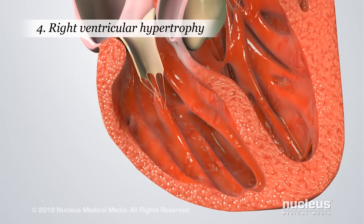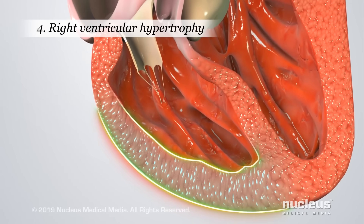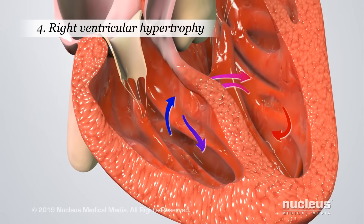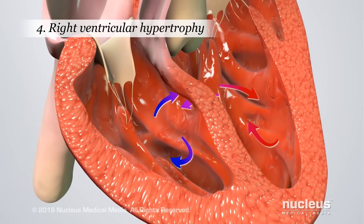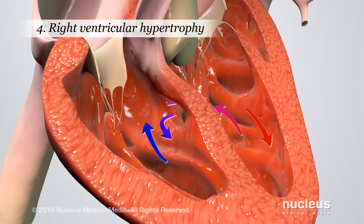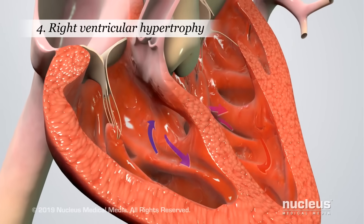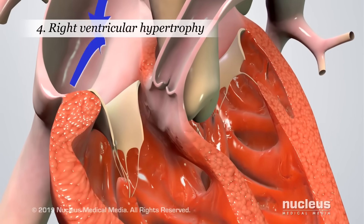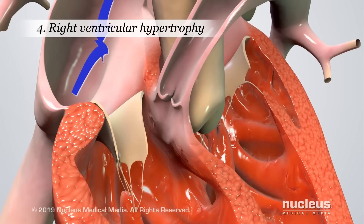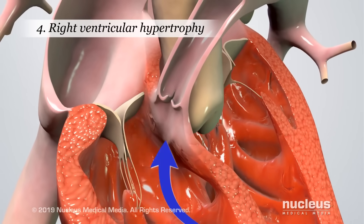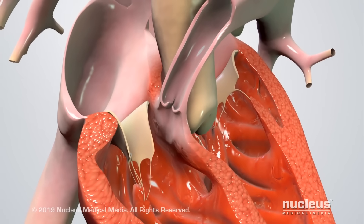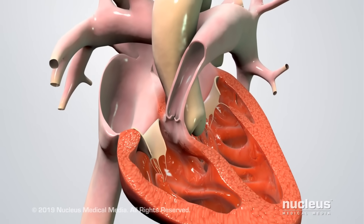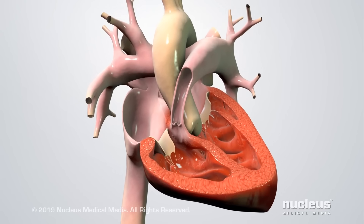Right ventricular hypertrophy means the wall of the right ventricle is thicker than normal. This is thought to happen in response to blood flow through the ventricular septal defect and from having to work harder to pump blood through the narrowed pulmonary artery, which results in increased blood pressure. Together, these four problems may prevent enough oxygen from reaching the baby's body.